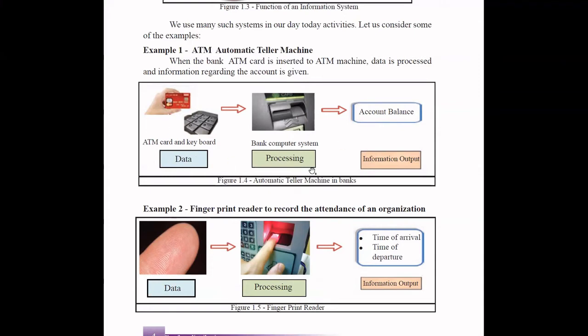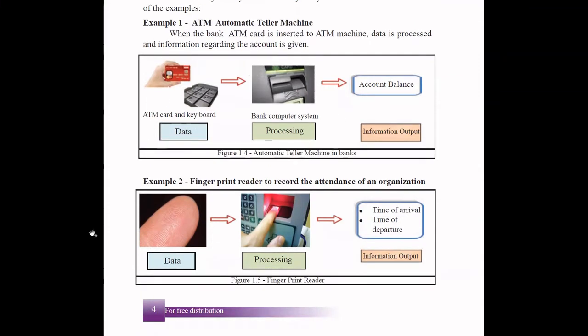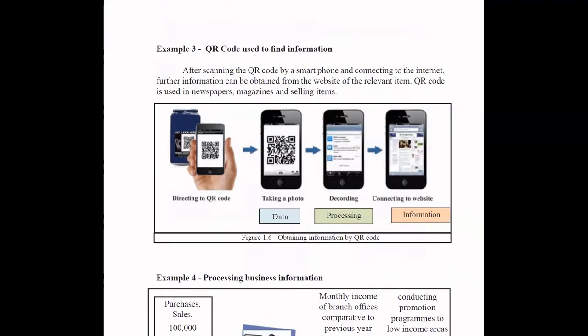If you think about a fingerprint reader, these are basically used in most organizations to record attendance. If you put your fingerprint, that's the input you're giving. In the back end it will be processed, checking who has this particular fingerprint and marking attendance for that employee. The information output will be sometimes just a successful message that your attendance is captured, or the time of arrival and departure will be saved against that employee, so attendance will be calculated accordingly.